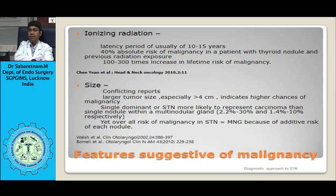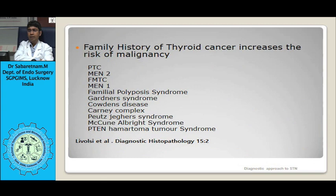Relevant syndromes associated with increased malignancy risk include MEN2 (multiple endocrine neoplasia 2), FMTC (familial medullary thyroid cancer), MEN1, familial polyposis syndrome, Gardner's syndrome, Cowden's disease, Carney complex, Peutz-Jeghers syndrome, McCune-Albright syndrome, and PTEN hamartoma tumor syndrome. If any of these are present in a first-degree relative, the patient with solitary thyroid nodule has a higher risk of malignancy.